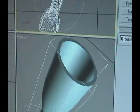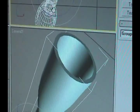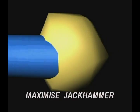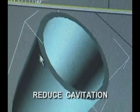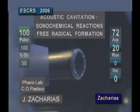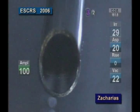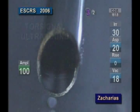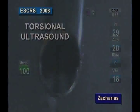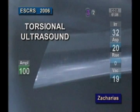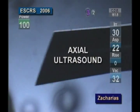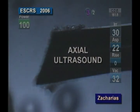With this in mind, technology should be focused on maximizing the jackhammer effect and reducing the cavitation effect, which does not assist in lens emulsification and can potentially have a negative impact. In this direction, the recent introduction of torsional phaco produces effective lens disruption with almost no cavitation compared to axial phaco emulsification.